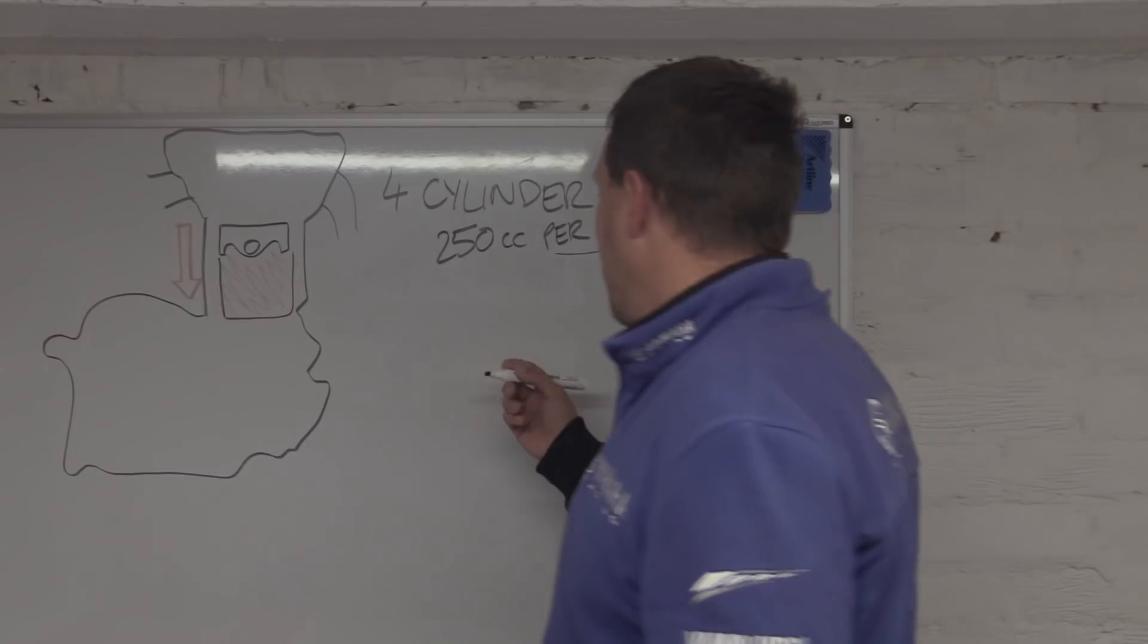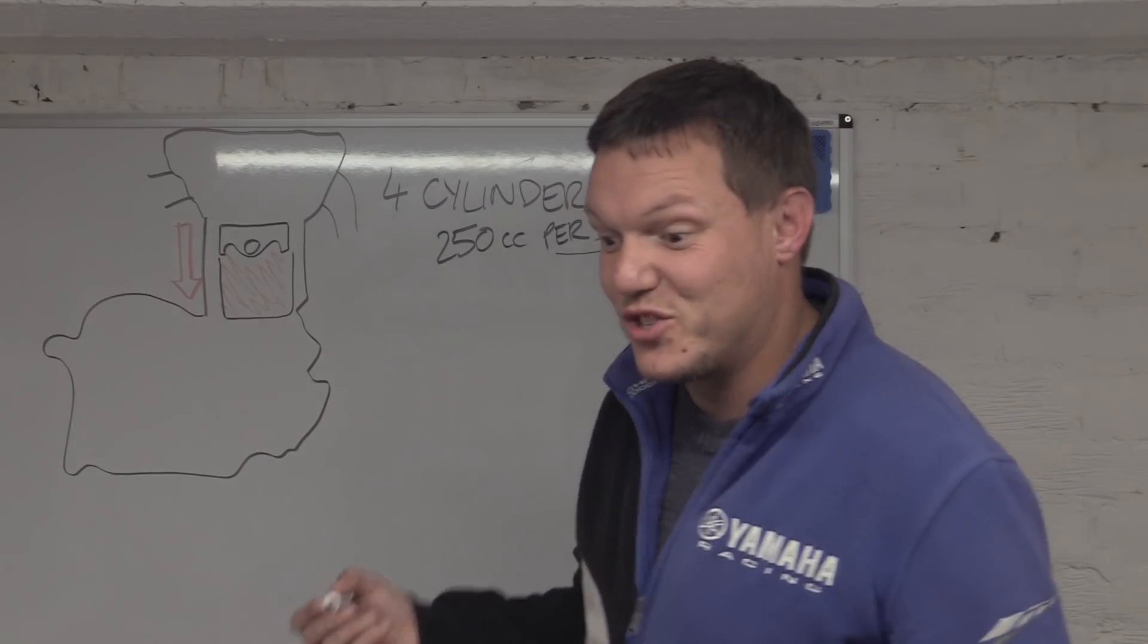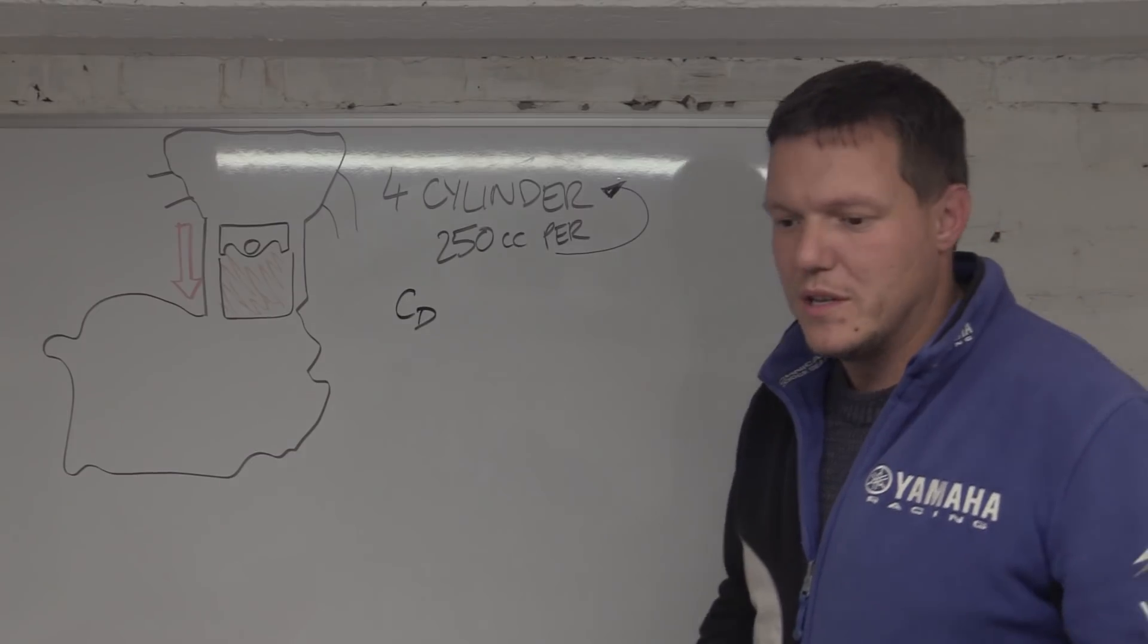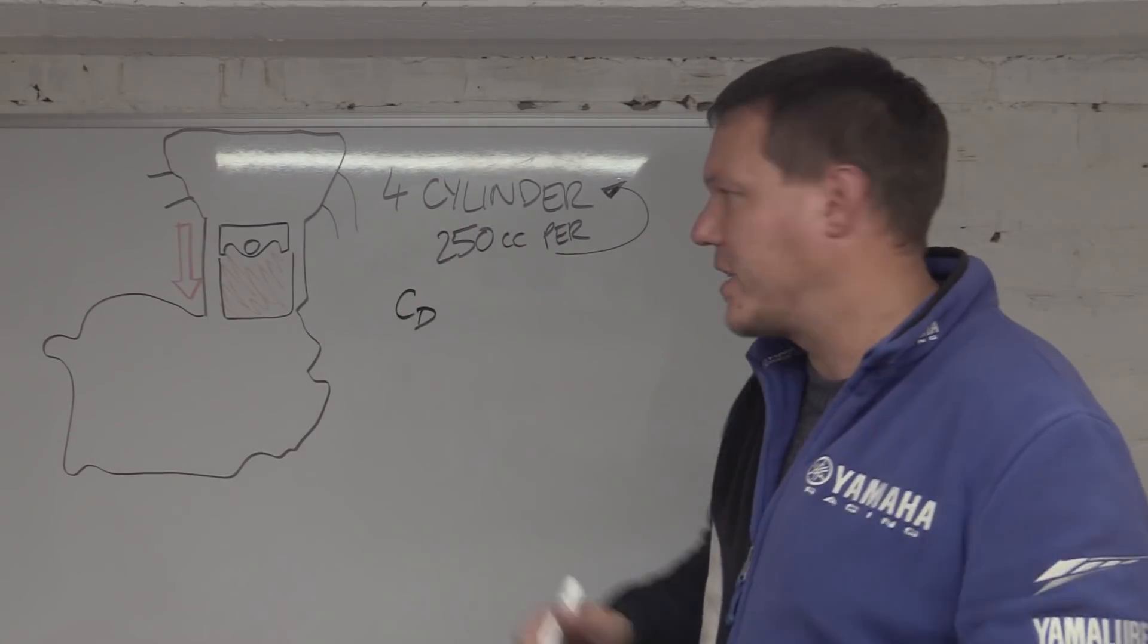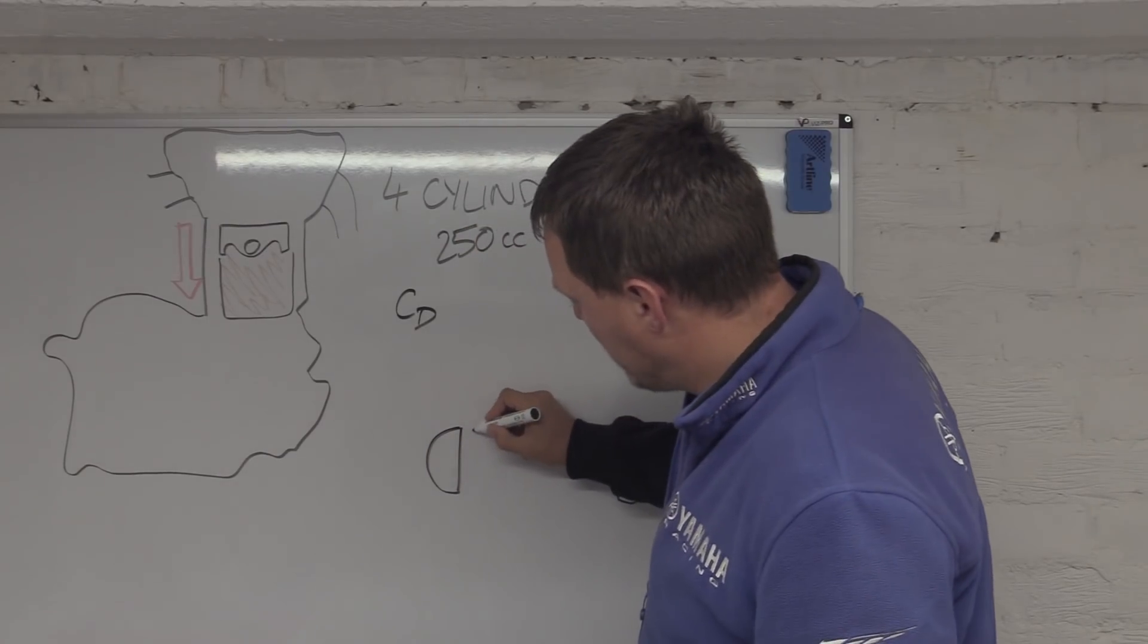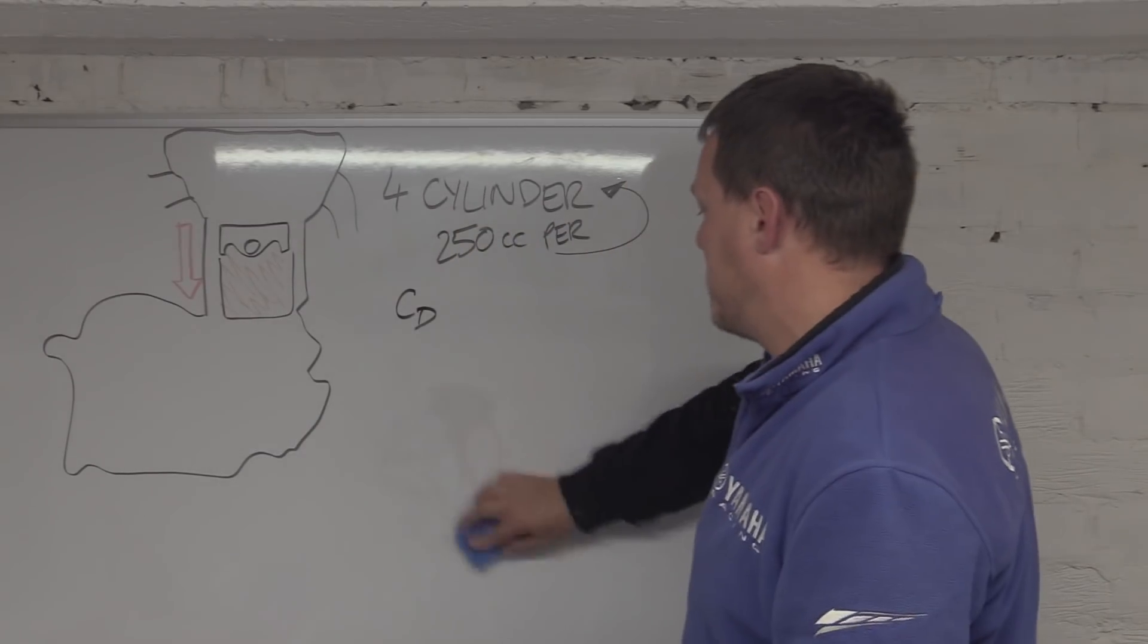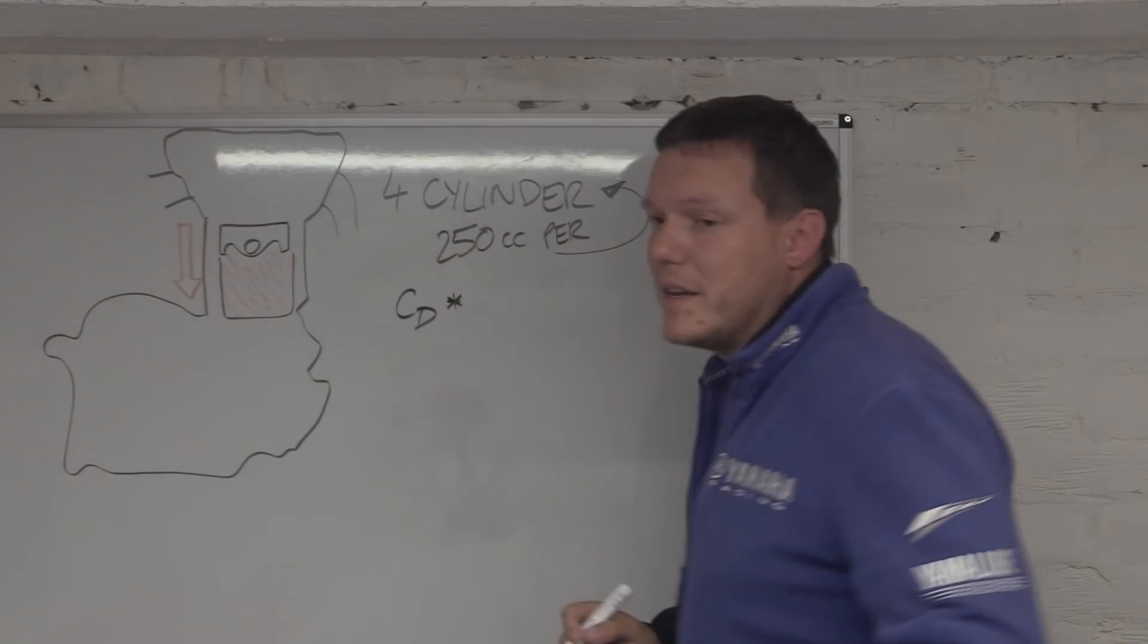I actually measured this by doing the old drag equation, which is the CD, the coefficient of drag, which is the relationship between form drag, straight-on drag versus skin drag. If you have a sphere like this, how much is surface area and how much is glancing blows.